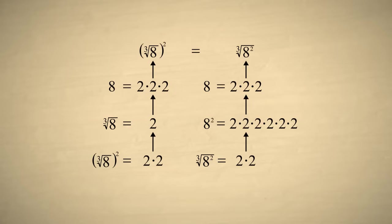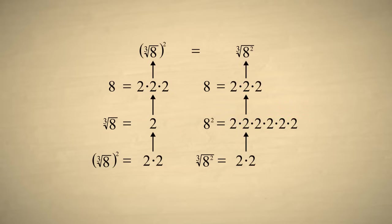It is now easier to see why both operations produce the same result. On the left side, we first eliminate all but one-third of the factors, and then multiply the number of factors by two. While on the right side, we first multiply the number of factors by two, and then take one-third of the factors. Since it doesn't matter in which order we multiply the number of factors by one-third and two, either way we will end up with the same number of factors, and we'll get the same result.